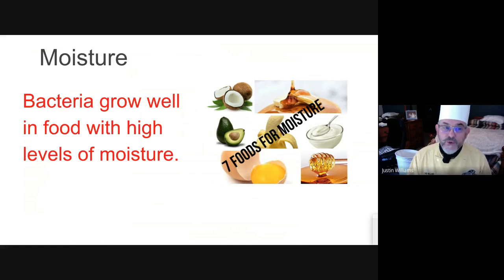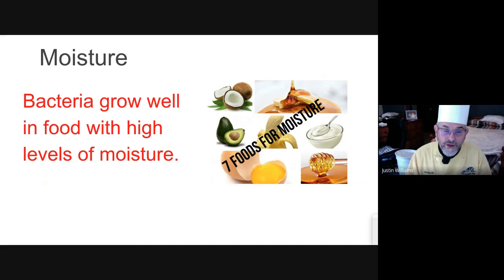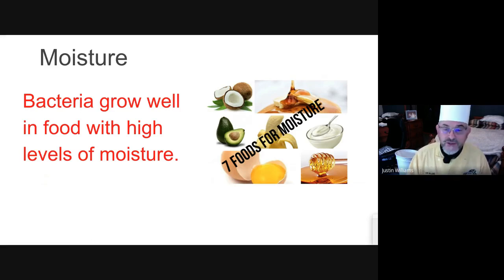Moisture: bacteria will grow in food with high moisture levels — it likes a lot of moisture. An example is lox, which is a side of salmon packed tightly in salt. What happens is the salt draws all the moisture out of the fish, so the microorganisms cannot grow.